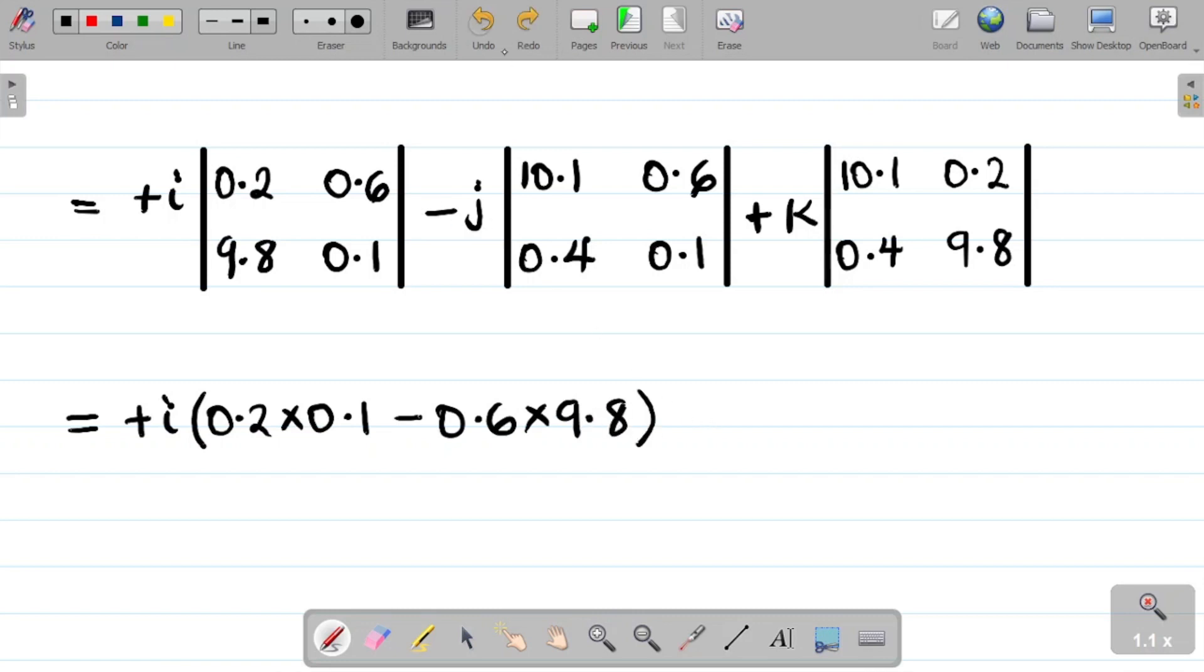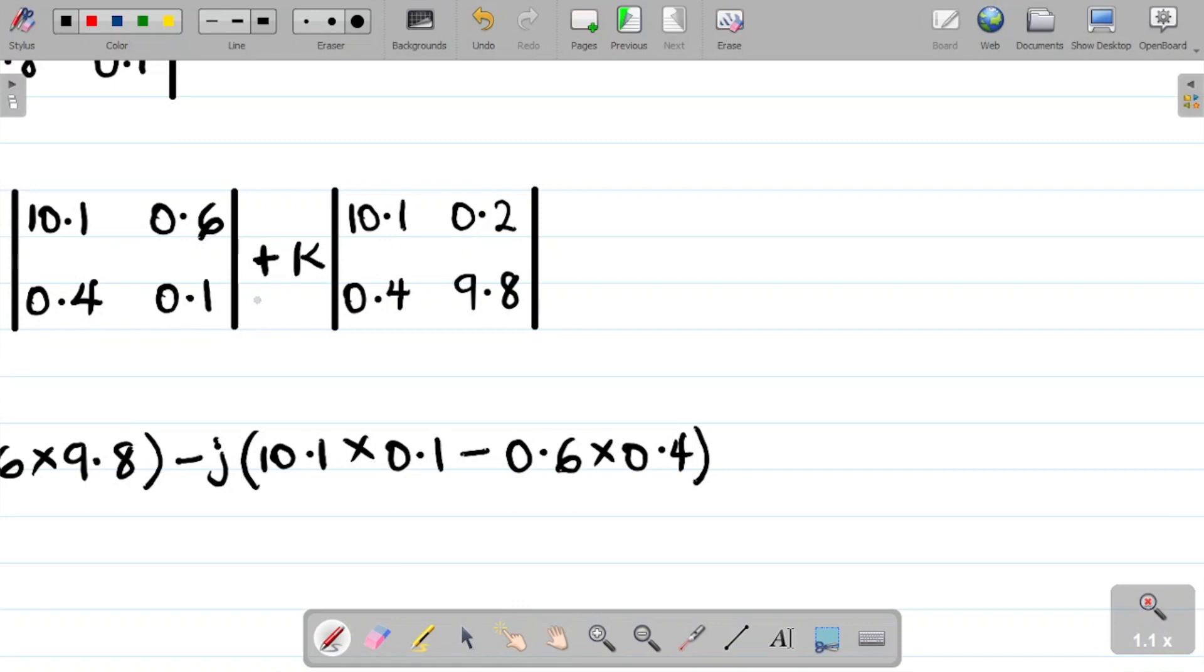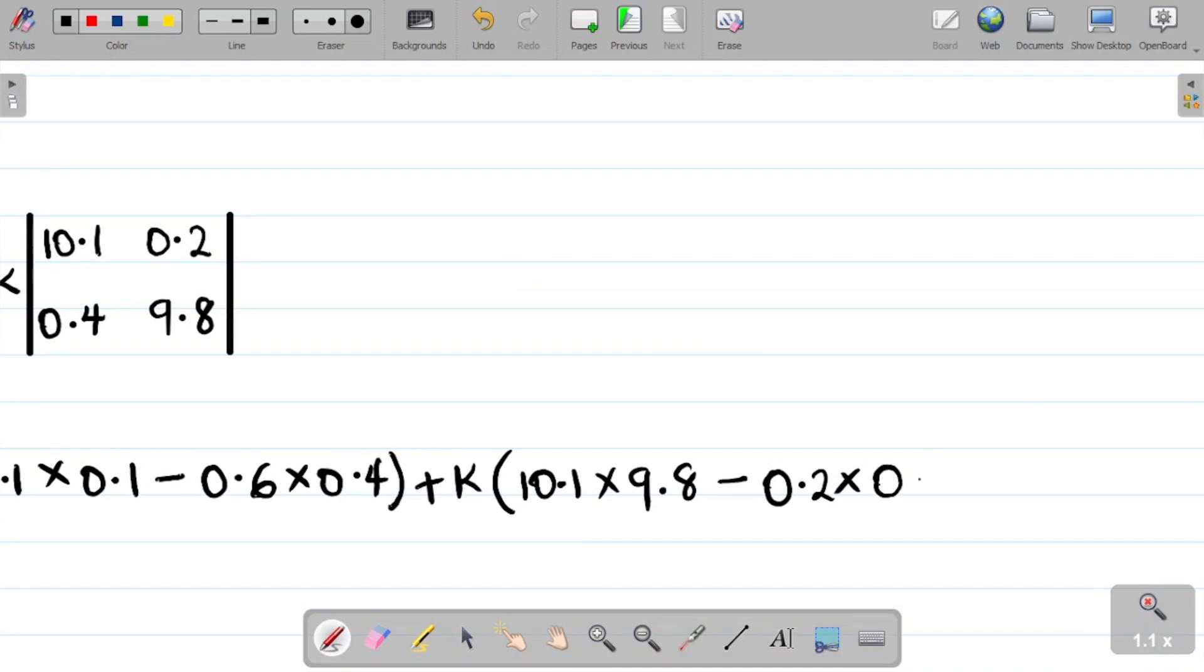That becomes 10.1, next one was 0.2, 0.4, and then 9.8. So with this now I've reduced the matrix to a 2 by 2 matrix. This is now equal to, I'm having plus i so it becomes plus i into. You multiply the ones on your principal diagonal, that's this two here. Multiply this element, so this two, and that becomes 0.2 times 0.1 becomes 0.2 times 0.1 minus this times this, that becomes 0.6 times 9.8.